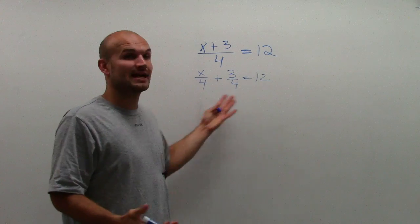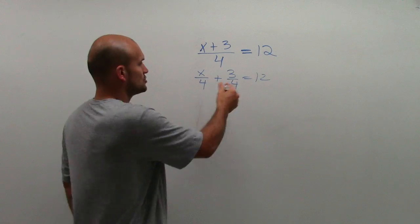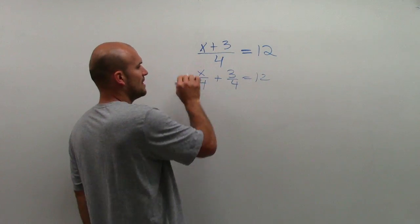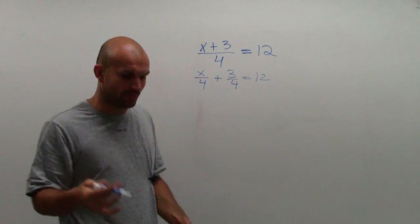So by breaking it up, now I could use my inverse operations, subtract 3 fourths on both sides, multiply by 4, and I get my variable by itself.